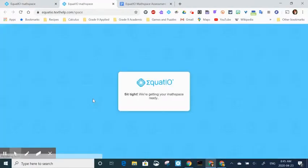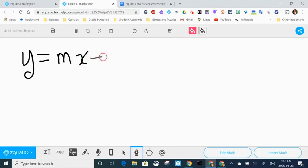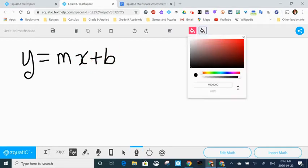First thing we're going to do is open up a new space from equatio.texthelp.com. Then I'm going to select the freehand drawing tool and just write a very common math expression for the equation of a line, y equals mx plus b.